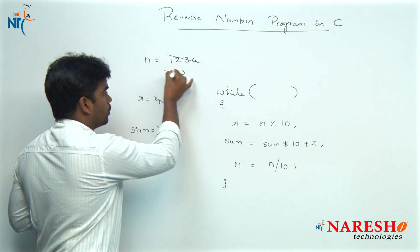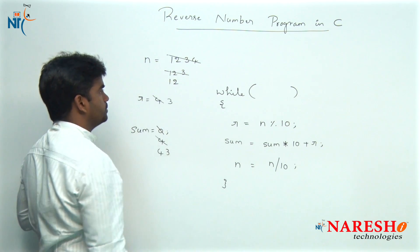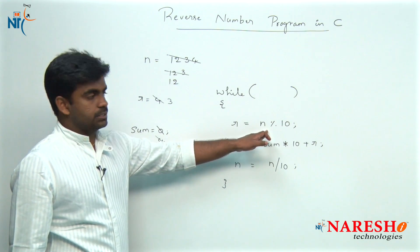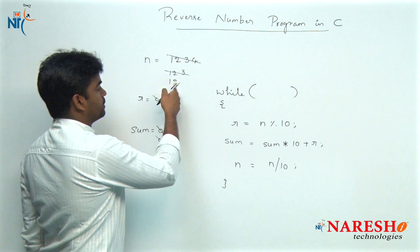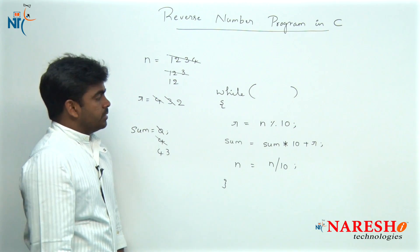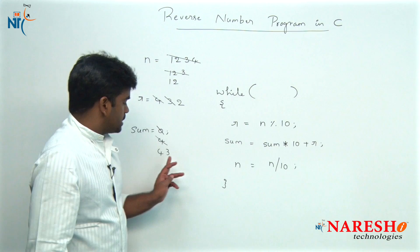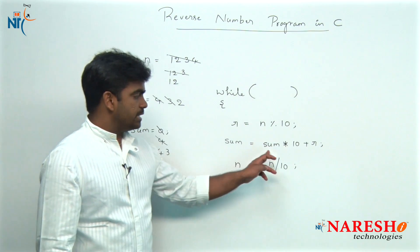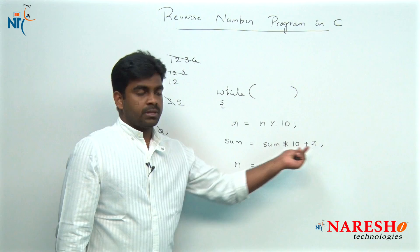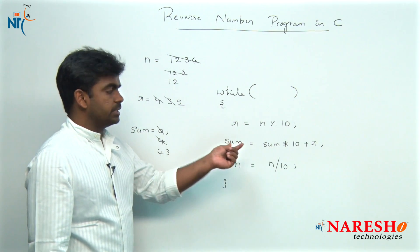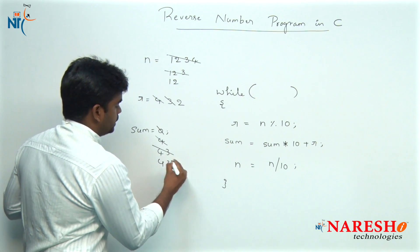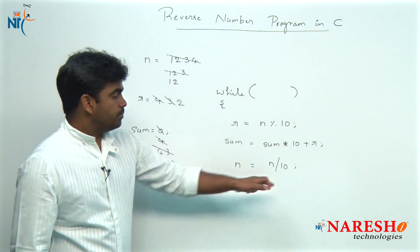Now it will become 12. Again it will repeat the loop. Here N mod 10 gives the last digit, which is 2. Sum into 10 means 43 multiplied by 10 is 430, plus R which is 2. So 432 will be stored into sum. And N by 10 gives 1.